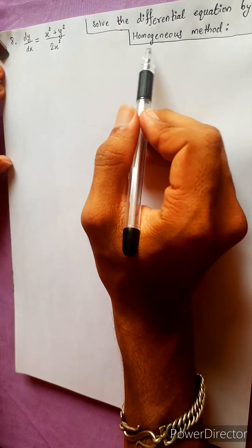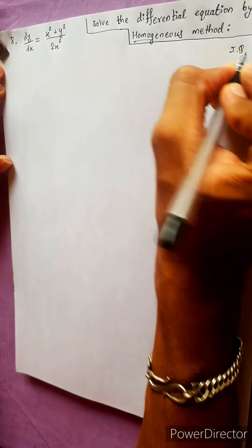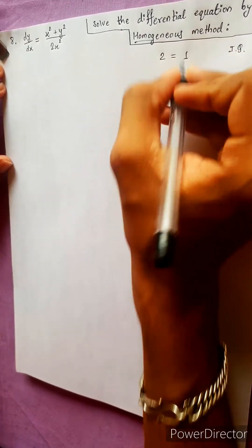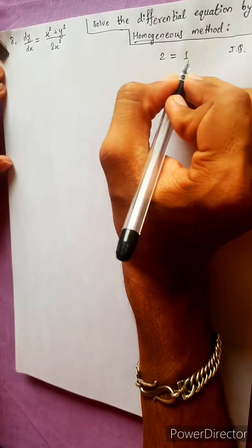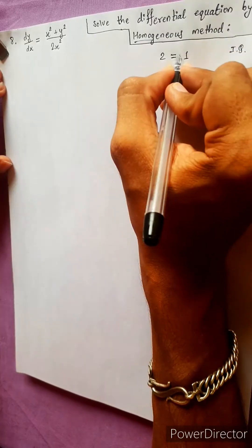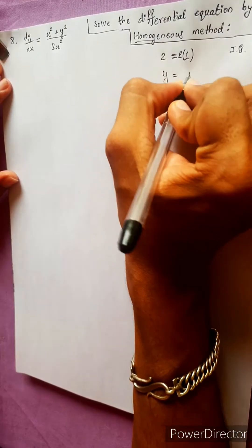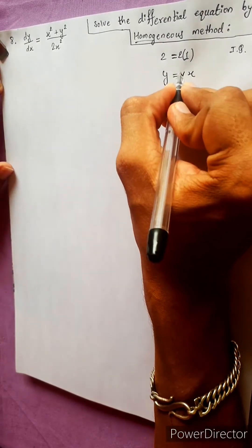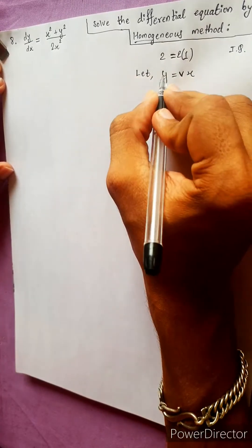We will solve the differential equation by the homogeneous method. The equation is homogeneous, which is true. Let y equals vx, where v is a constant multiplied by x.